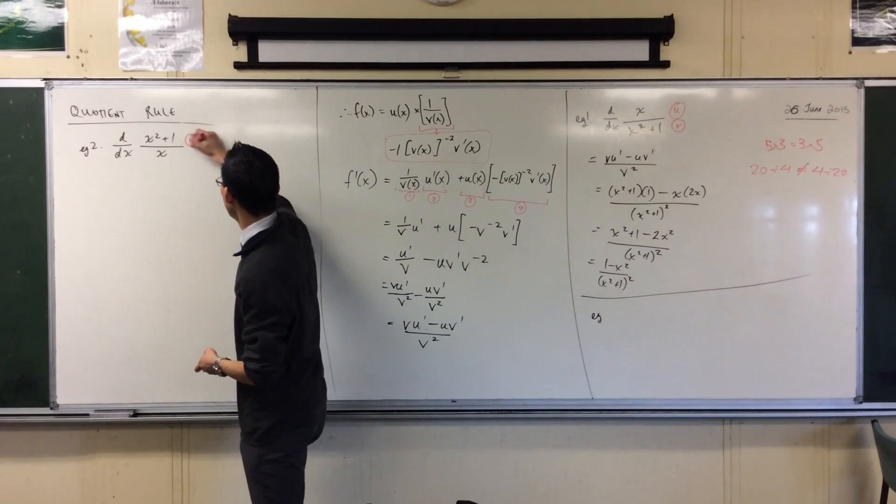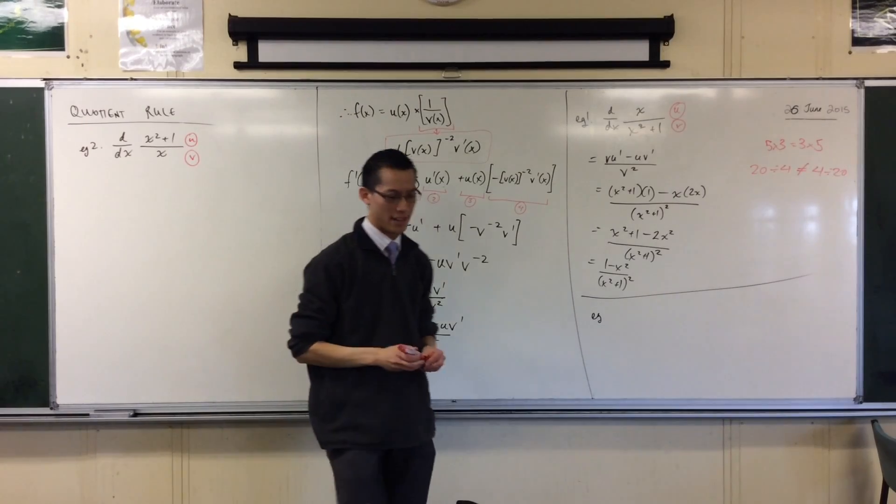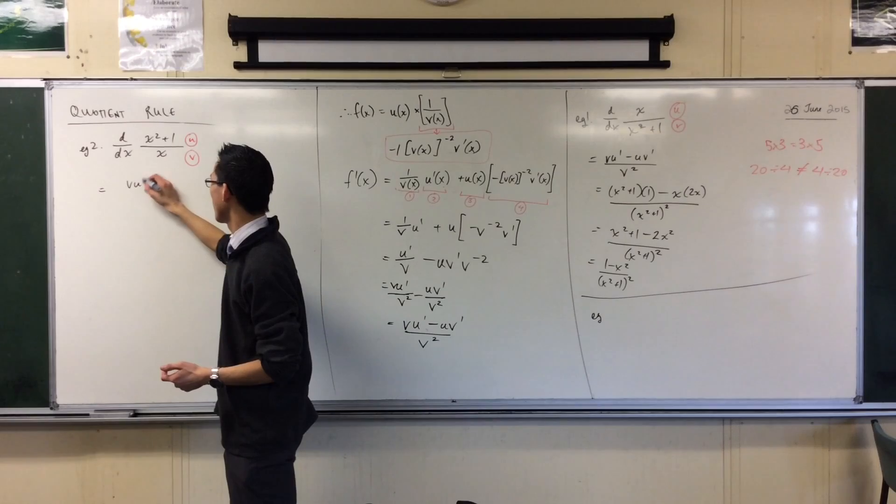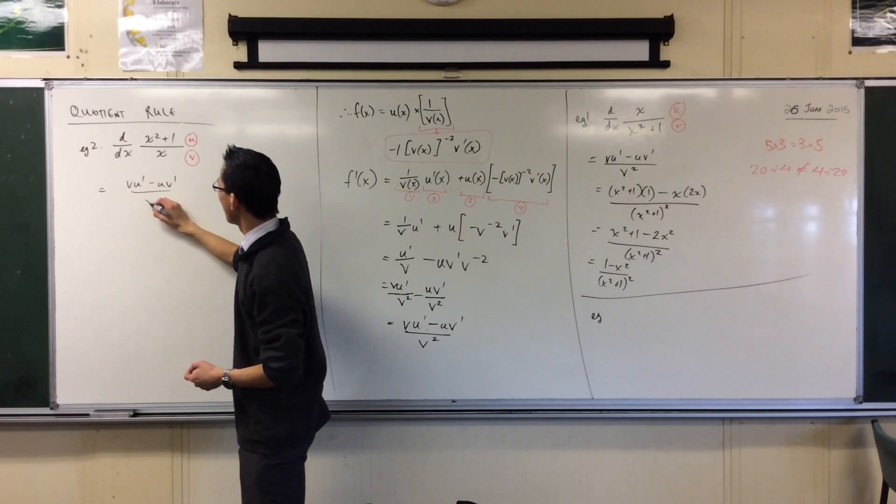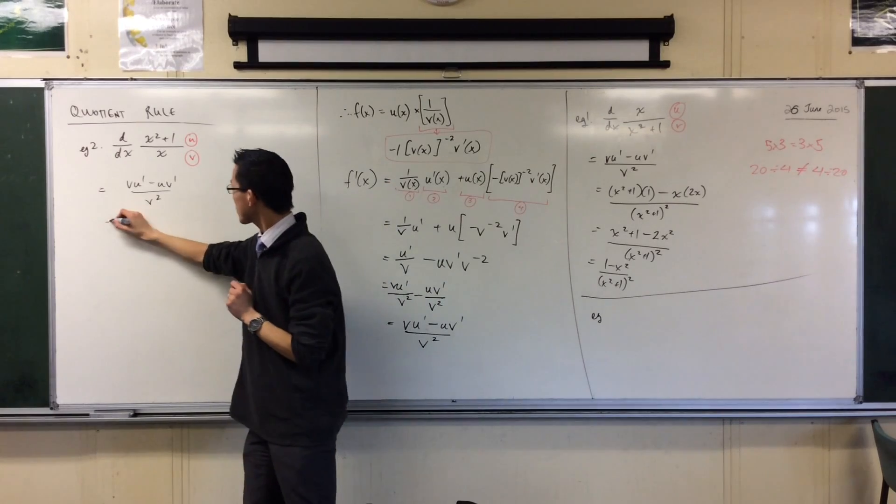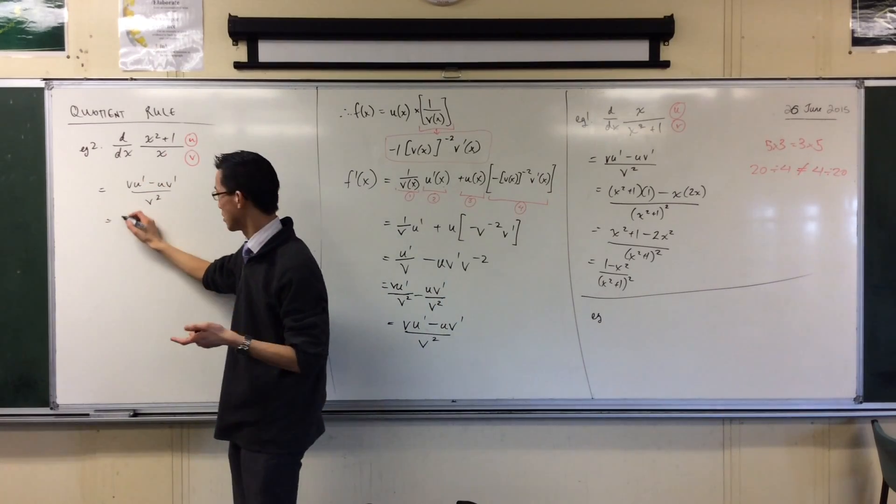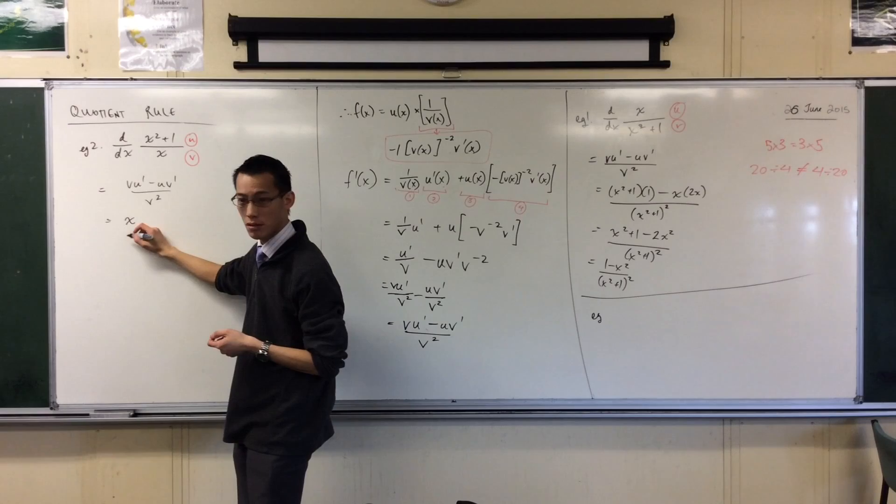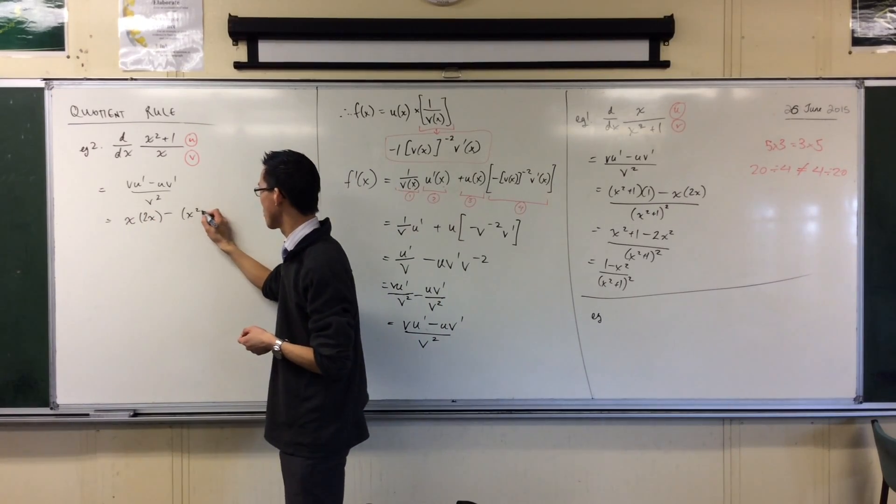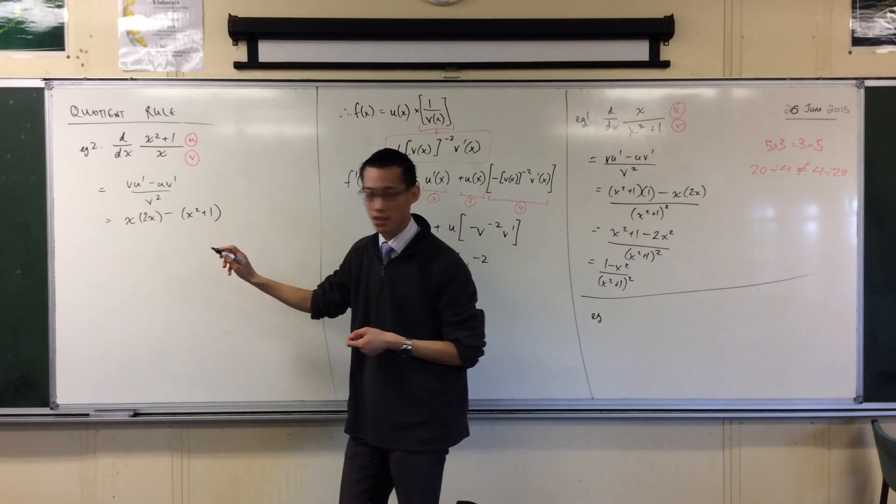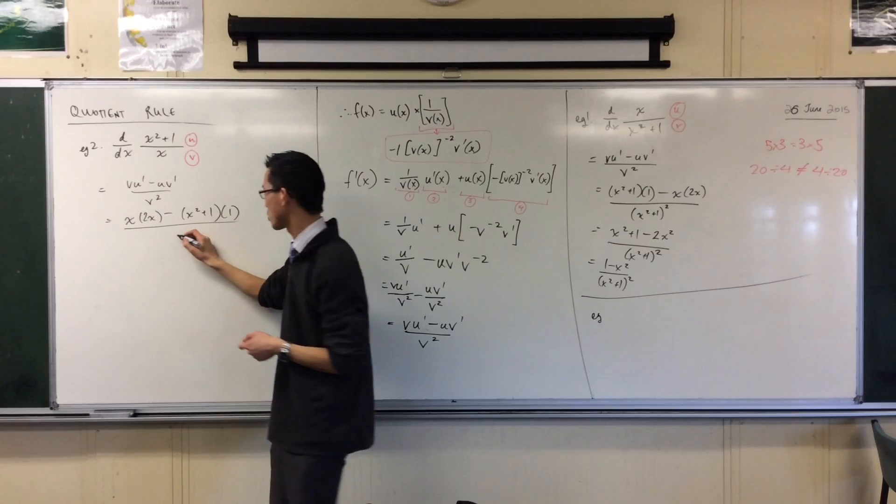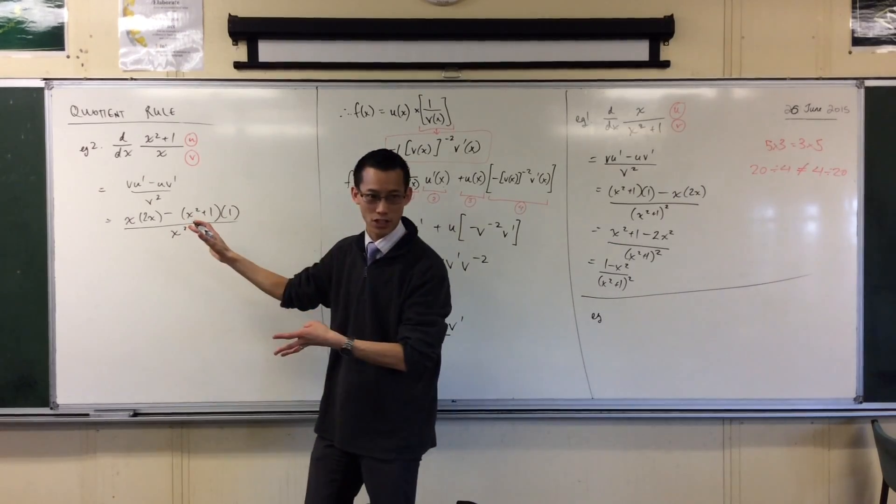Let's give it a shot. U, V. Label them. When I differentiate this, I'm just going to put all my pieces together, and then I'm going to evaluate. So, what have I got on the top? I've got V, which is X. What's U dash? 2X. Take away U, which is X squared plus 1. V dash is just 1. All over X squared. There's my V, my denominator.